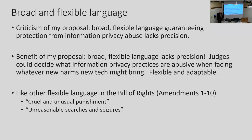Broad and flexible language — one criticism of my proposal is that it lacks precision. But that's actually the benefit. Judges could decide what information privacy practices are abusive when facing new harms. The flexibility and adaptability are the benefit. Think of the flexible language in the Bill of Rights — 'cruel and unusual punishment,' the Eighth Amendment; 'unreasonable searches and seizures,' the Fourth Amendment. Courts have to define what that means, and it changes over time depending on how society perceives these things. Flexibility could be good — that's kind of what constitutional amendments are all about.